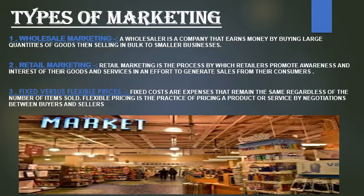Now we will discuss the types of marketing. First, what is wholesale marketing? Wholesale marketing is when a company earns money by buying large quantities of goods and selling in bulk to smaller businesses. In wholesale marketing, things are picked up in bulk. Traders, after picking things up in bulk, contact small traders and give their materials to them. In this system, the cost effect is that things are not as costly as the fixed price we get from retailers. So, in wholesale marketing, goods are taken in bulk and supplied to small traders, that is, retailers.